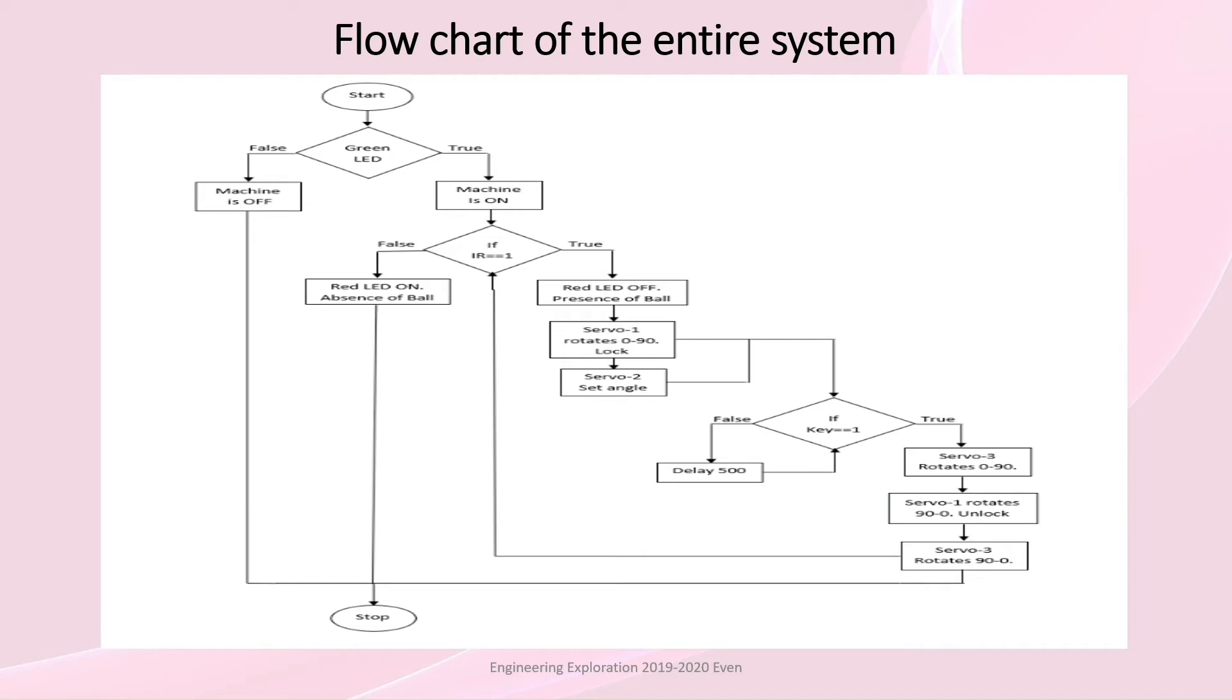If key sends message not equal to 1, delay of 500 is given. If key sends message equal to 1, servo 3 rotates 0 to 90. Servo 1 rotates 90 to 0. It unlocks and the ball launches. Then servo 3 rotates 90 to 0. The loop continues till red LED is on and balls are absent. Then finally the process stops.